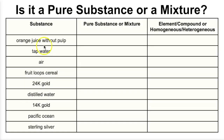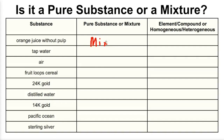We've got a bunch of substances. All we're going to do is determine if they're pure substances or mixtures, and if they're pure substances, are they elements or compounds? And if they're mixtures, are they homogeneous or heterogeneous? Pause ahead of time and see if you can get these on your own. Orange juice without pulp is definitely going to be a mixture. And is it homogeneous or heterogeneous? Well, it says without pulp, so that is going to be a homogeneous mixture.